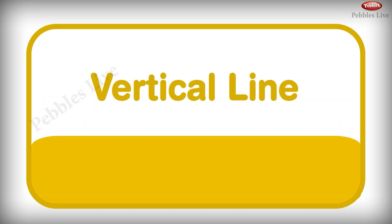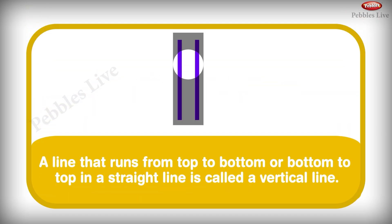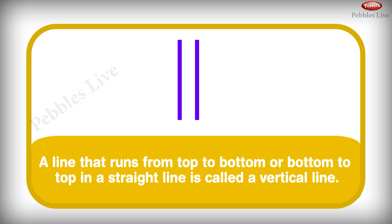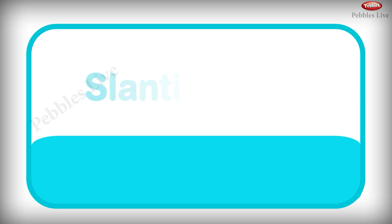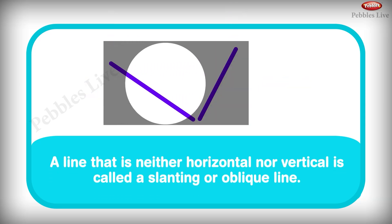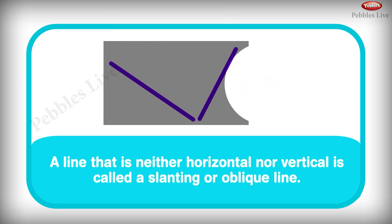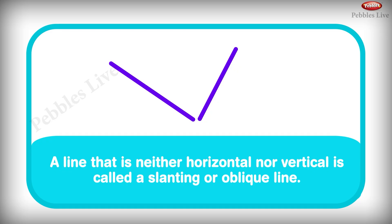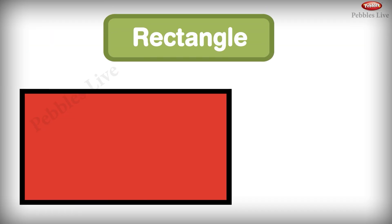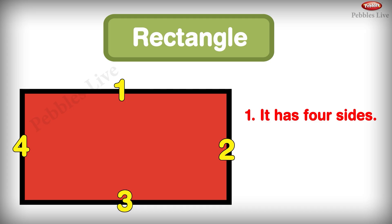Vertical Line: A line that runs from top to bottom or bottom to top in a straight line is called a vertical line. Slanting Line: A line that is neither horizontal nor vertical is called a slanting line.